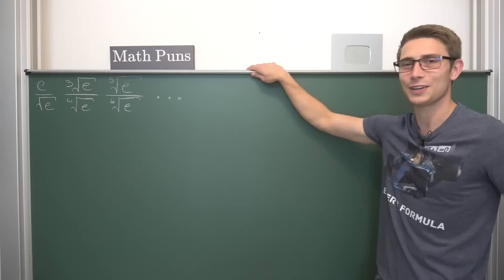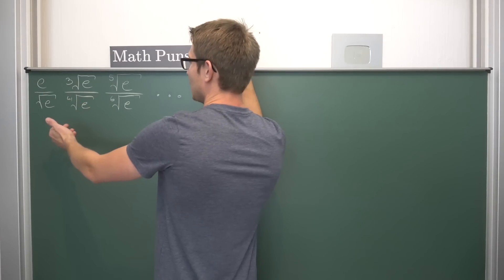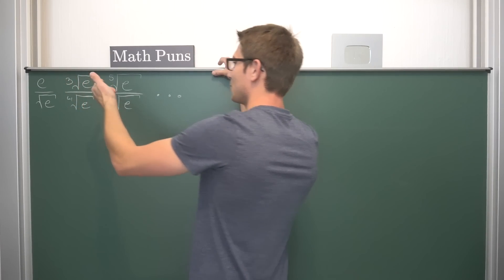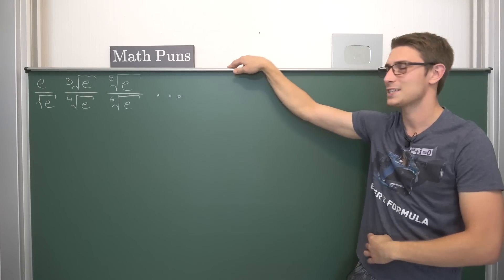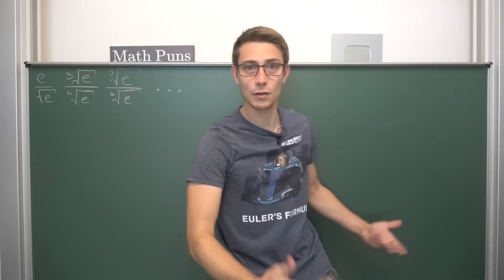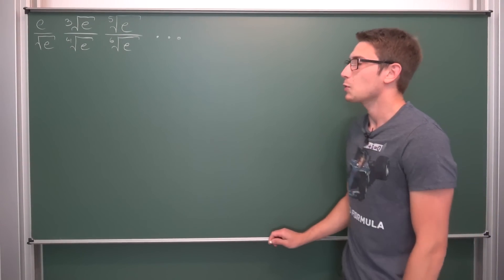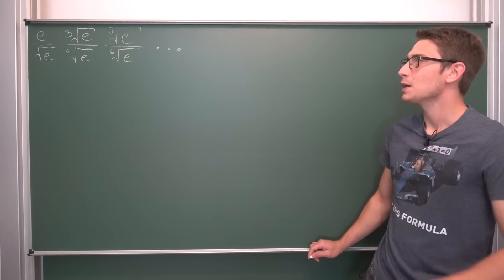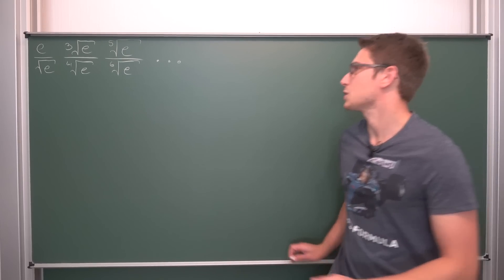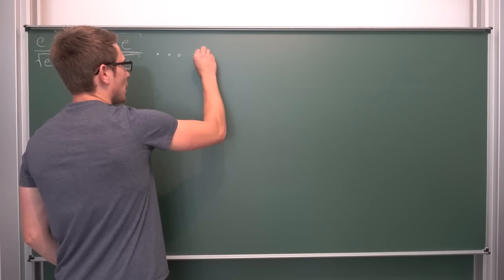We got this infinite product here. It looks kind of funky: e divided by the square root of e times the cube root of e divided by the fourth root of e and so on, multiply together up until infinity. This is the product we are going to deal with and I hope you enjoy the video.